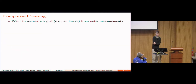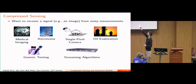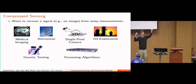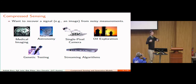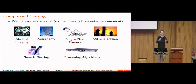Compressed sensing: the idea is we want to recover some signal — like an image or some other kind of signal — from noisy measurements. This appears in many different places. If you're doing an MRI, you have a machine that applies some magnets and measures something about your brain. In astronomy, you place radio telescopes and measure some function of the distances between them. In genetic testing, you mix blood samples and measure how much of a gene of interest is in the mixture.